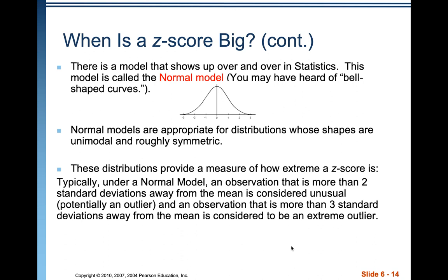This model is called the normal model, or you may have heard of bell-shaped curves. Normal models are appropriate for distributions whose shapes are unimodal and roughly symmetric. These distributions provide a measure of how extreme a z-score is, and this applies only to normal distributions.